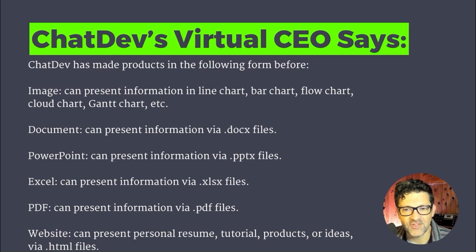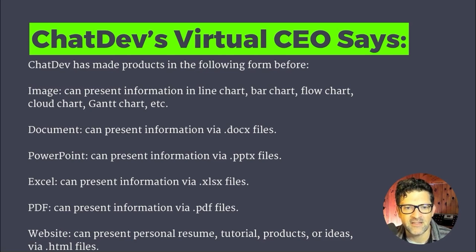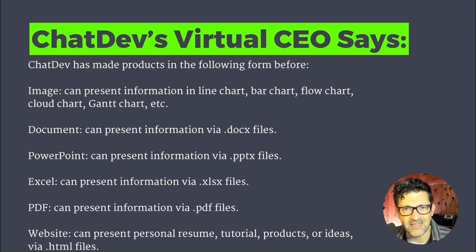Now I want to look at what the ChatDev virtual CEO says at the beginning of any project. When you queue up a project, the first thing that is generated is a CEO telling the team about the project, and the CEO goes through this prompt to the team. It says that ChatDev has made products in the following forms before: image, document, PowerPoint, Excel, PDF, and website. So just taking a look at this — you might want to take a screen grab — but these are some additional ideas of projects that you can create. And some of these include outputs of those projects as well.